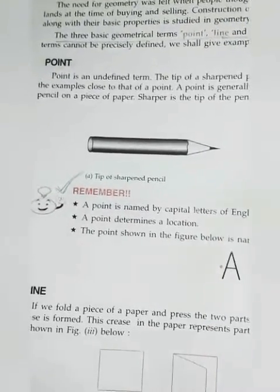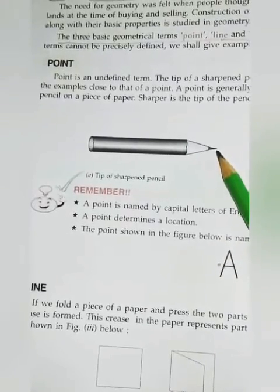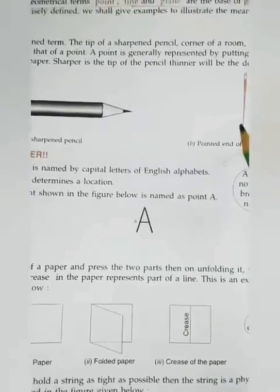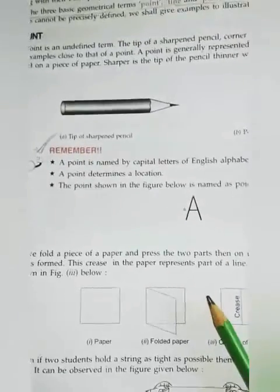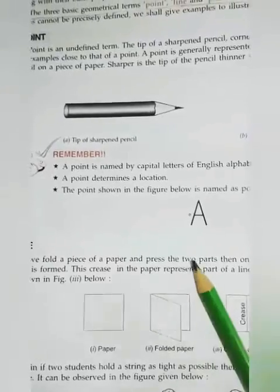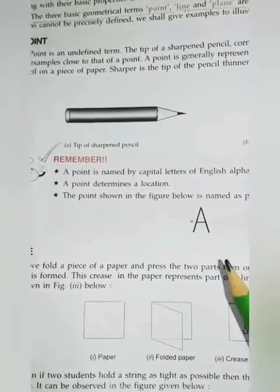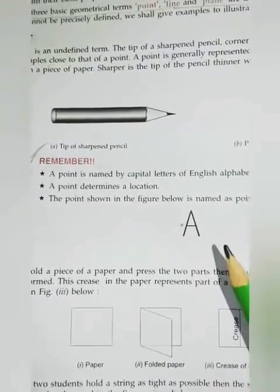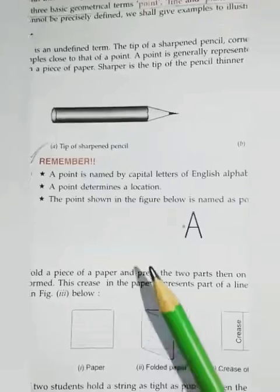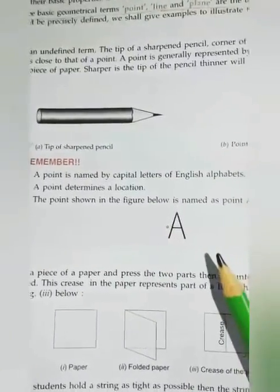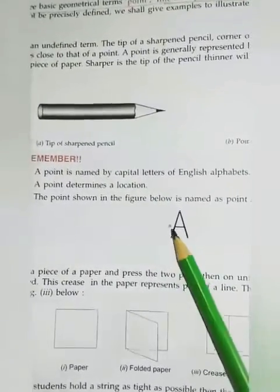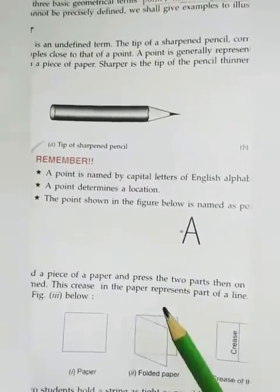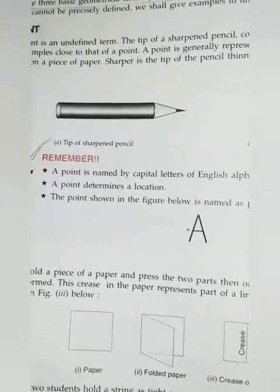Here you see tip of sharpened pencil, one point. And here pointed end of a needle. Children, remember, a point is named by capital letters of English alphabets. A point determines a location. A point shown in the figure below is named as point A. A point has no length, no breadth, and no height.